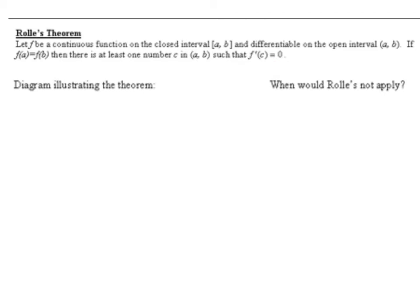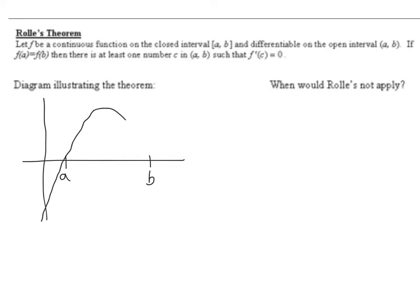So let's talk about what this looks like. We have a diagram illustrating the theorem. Here's my x-y axis. Here's A, here's B, and I have some kind of function that goes through A and through B, so that there is some value C where the slope of this line is zero. It's saying that if f of a equals f of b, then the derivative has to be zero. And according to Fermat, that means there exists a max or a min between A and B.